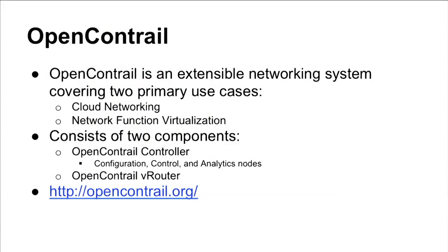Outside of the internal neutron reference implementation, there are other open source implementations. The first is Open Contrail, designed to solve two primary use cases: cloud networking and network function virtualization — both of which fall within the domain of OpenStack and specifically Neutron. Open Contrail at a high level consists of two primary components: the Open Contrail controller and the vRouter. More detailed information is available on their website.